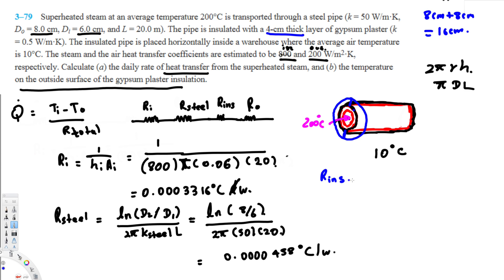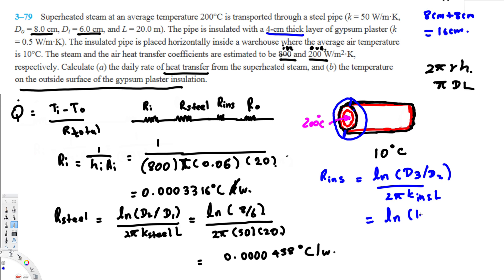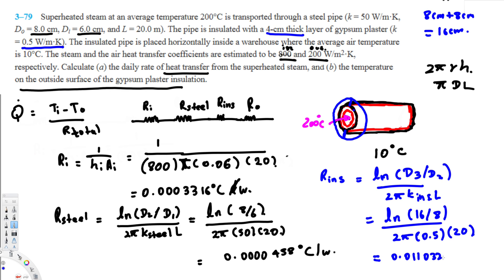For R_insulation, the formula is ln(d3/d2) over 2π times k_insulation times L. Plugging in: ln(16/8) over 2π times 0.5 watts per meter kelvin times 20 meters. This gives 0.011032 degrees Celsius per watt.